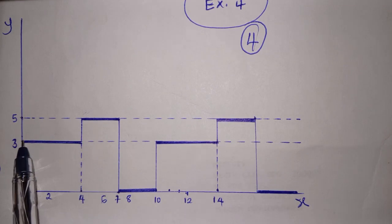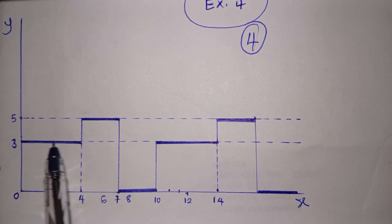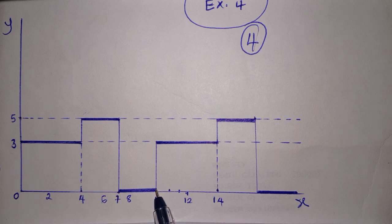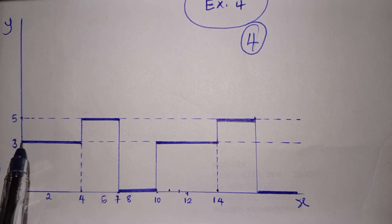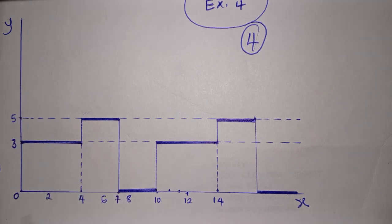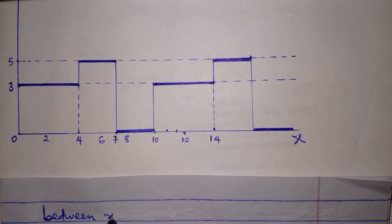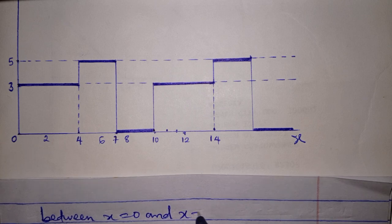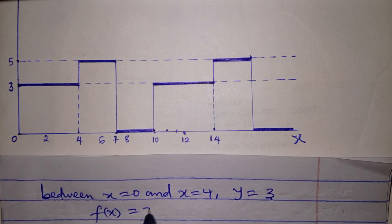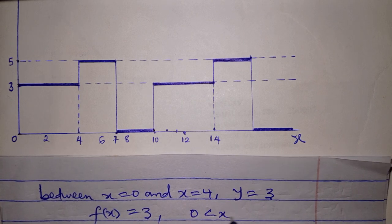Let's see the last one. The function started from here and we can see the same pattern here again, so the period is 10. If we can describe the function from here to here, it means we have gotten a description of the entire function. Between x equal to 0, x is 0 and y is 3. So between x equal to 0 and x equal to 4, y is equal to 3. That is to say f of x equals 3 in the interval 0 less than x less than 4.